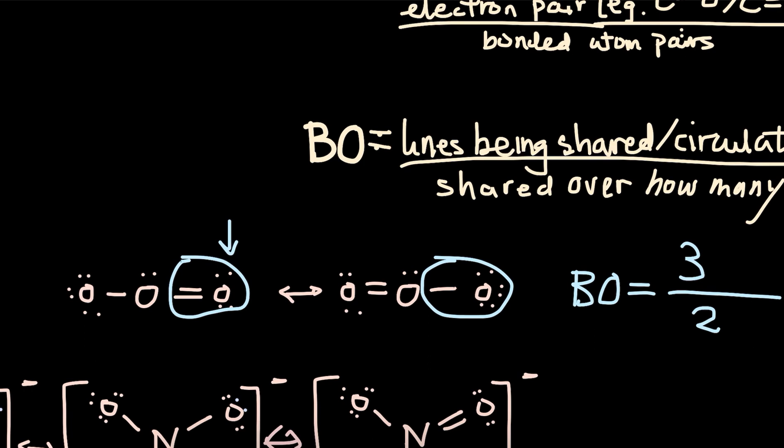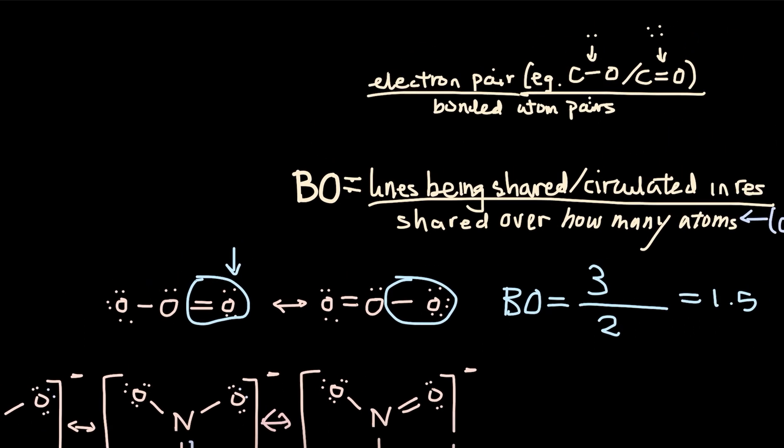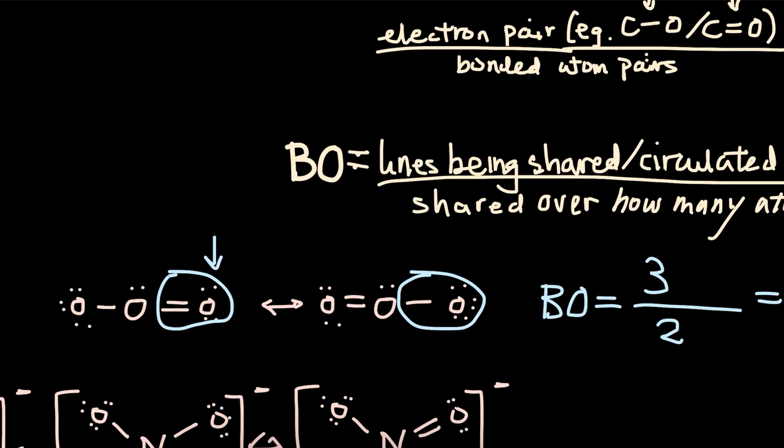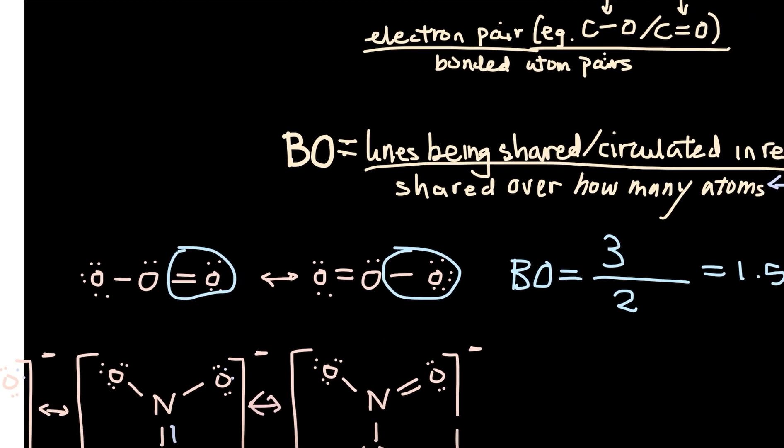This is one way you can look at it. You can also look at it, how many lines are being circulated. Well, there are two places that these resonance bonds can be at. One on this oxygen, oxygen one, oxygen two. There are two places that you can distribute these three electrons, these delocalized electrons.